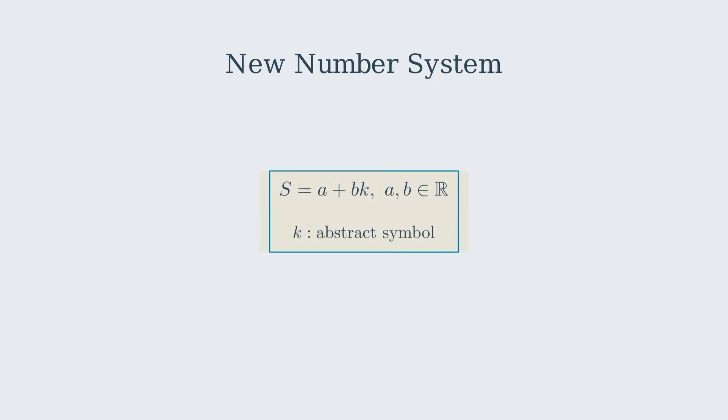Since e to the x doesn't have roots in the usual number systems, let's invent a new one. Imagine a number s equals a plus b times k, where a and b are real numbers, and k is a special abstract symbol. Here's the key rule: e to the k equals 0,